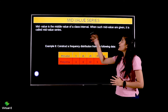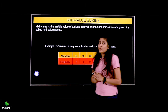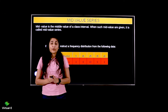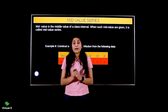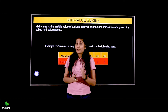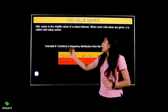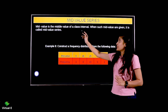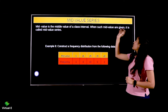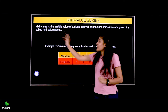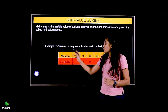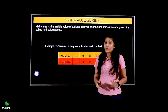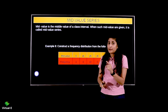The last topic is mid-value series. Mid-value series mein kya hota hai — you find the mid value. For example, if 0 to 10 is given, the mid value will be 5. Now, mid value is the middle value of a class interval. When such mid values are given, it is called the mid-value series — that means mid values and frequencies are given, but classes are not given; you have to form the classes yourself.